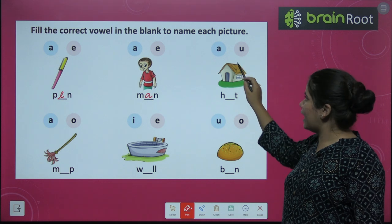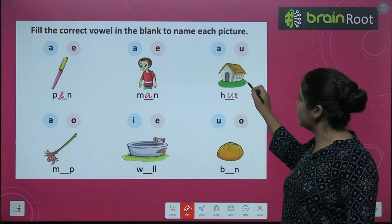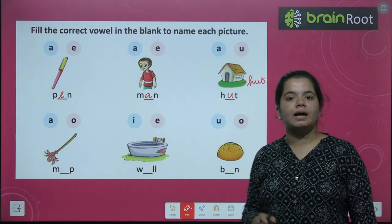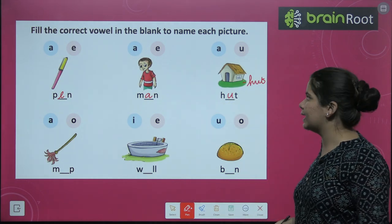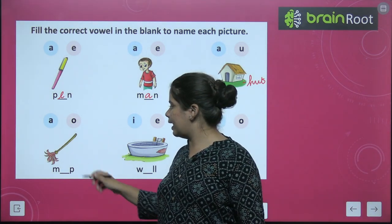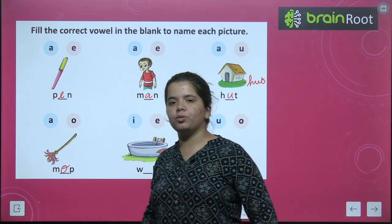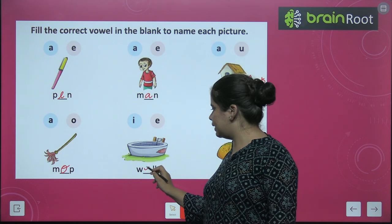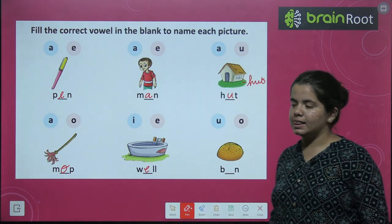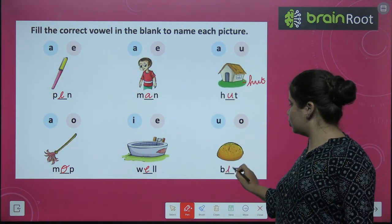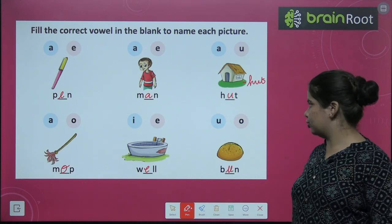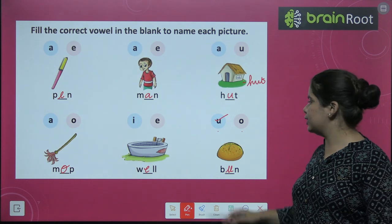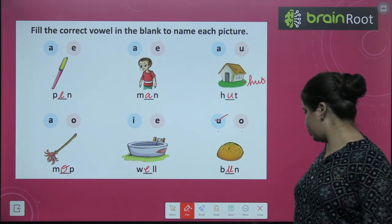H-T: it's a picture of a hut, so H-U-T, hut. Then M-O-P, mop — mop means a broom/mop. Then W-E-L-L, well. Then B-U-N, bun — here O or U? Correct — U goes here. B-U-N, bun.